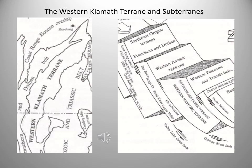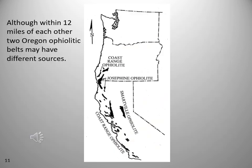The Josephine ophiolite is covered by a three-mile thick sandstone and shale deposit in the Glaise Basin. Although within 12 miles of each other, two Oregon ophiolitic belts may have different sources. The Josephine ophiolite developed during rifting of a basin close to the western margin of North America, while the coast range ophiolite may have more exotic origins.